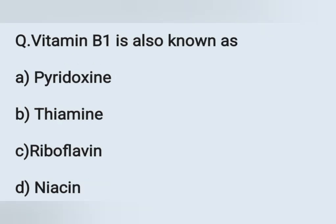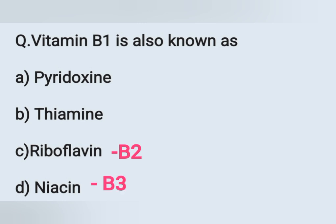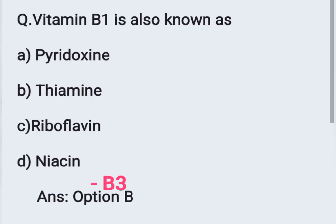The next question: Vitamin B1 is also known as — Option A: pyridoxin, Option B: thiamine, Option C: riboflavin, Option D: niacin. Pyridoxin is vitamin B6, thiamine is B1 — so Option B is the correct answer. For reference: B2 is riboflavin, B3 is niacin, B5 is pantothenic acid, B6 is pyridoxin, B7 is biotin, B9 is folic acid, B12 is cyanocobalamin.